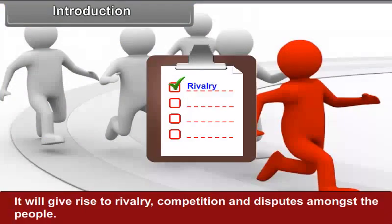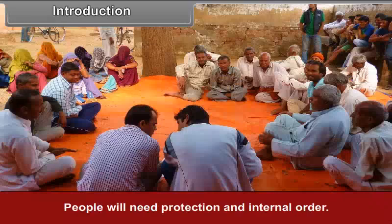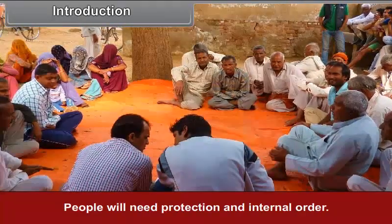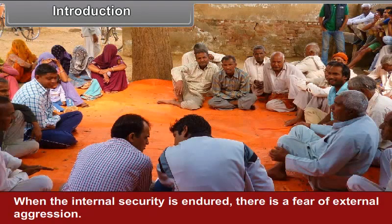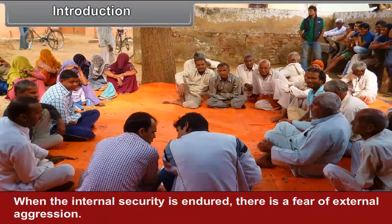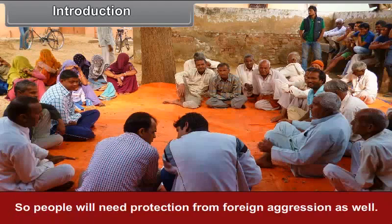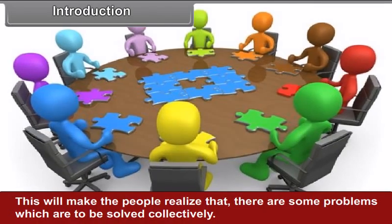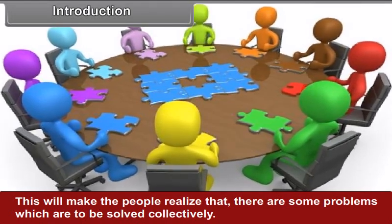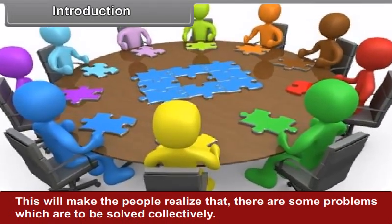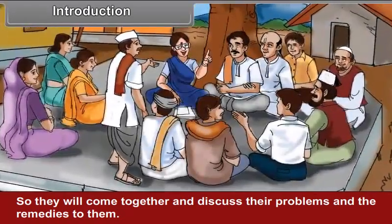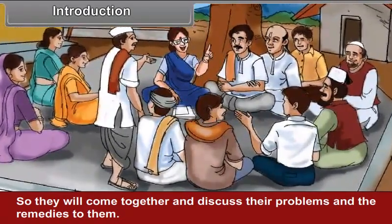The rule of 'might is right' will prevail in the group. Conflicting interests will make everyone suffer, giving rise to rivalry, competition, and disputes amongst the people. People will need protection and internal order. When internal security is in question, there is also a fear of external aggression, so people will need protection from foreign aggression as well. This will make people realize that there are some problems which are to be solved collectively, and they will come together and discuss their problems and the remedies to them.